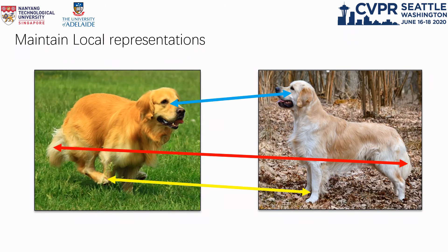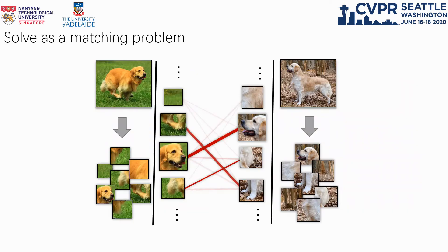A natural approach to determine the similarity of two complex structured representations is to compare their building blocks. The difficulty lies in that we don't have correspondence supervision for training, and not all building elements can always find their counterparts in the other structure. To solve these problems, in this paper, we formalize few-shot image classification as an instance of optimal matching, and we propose to use the optimal matching cost between two structures to represent their dissimilarity.